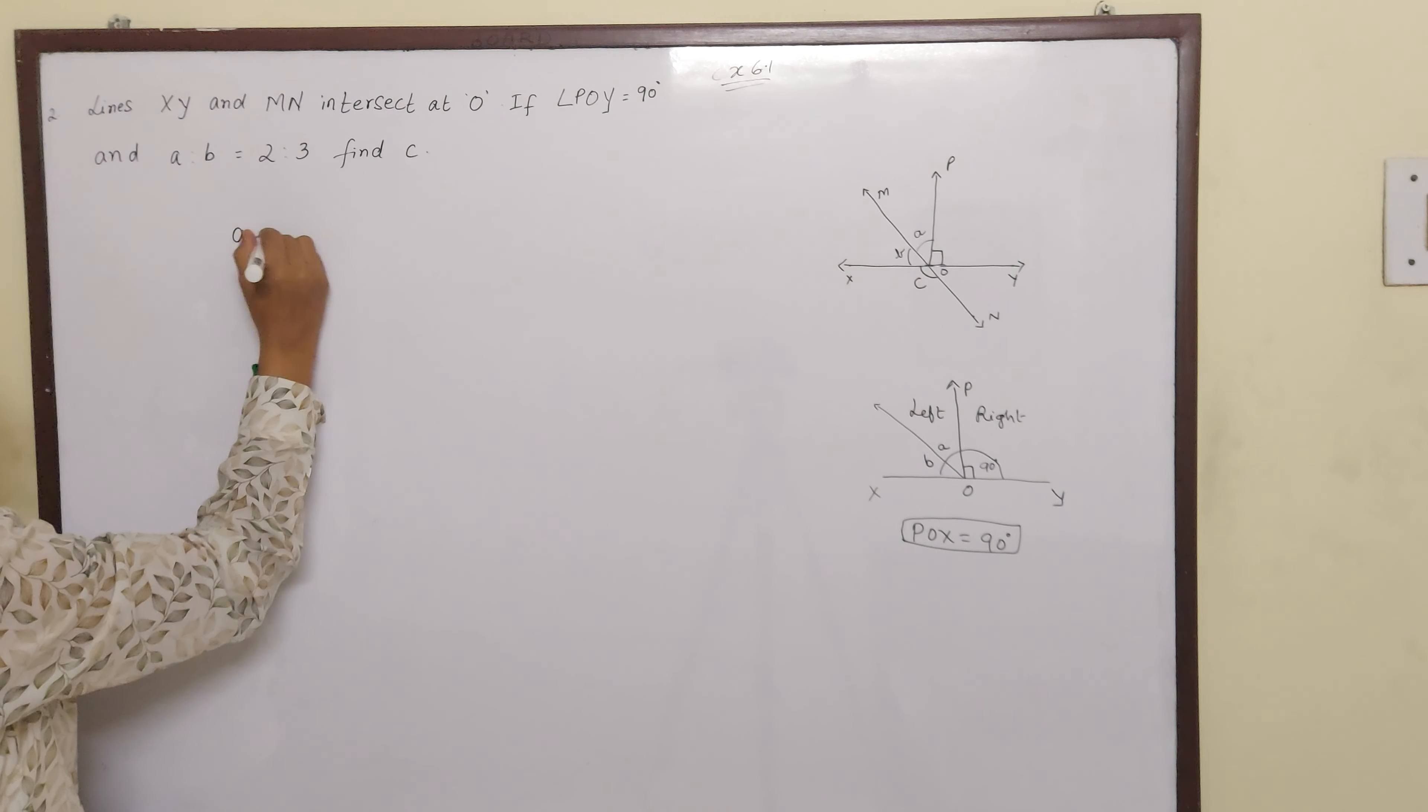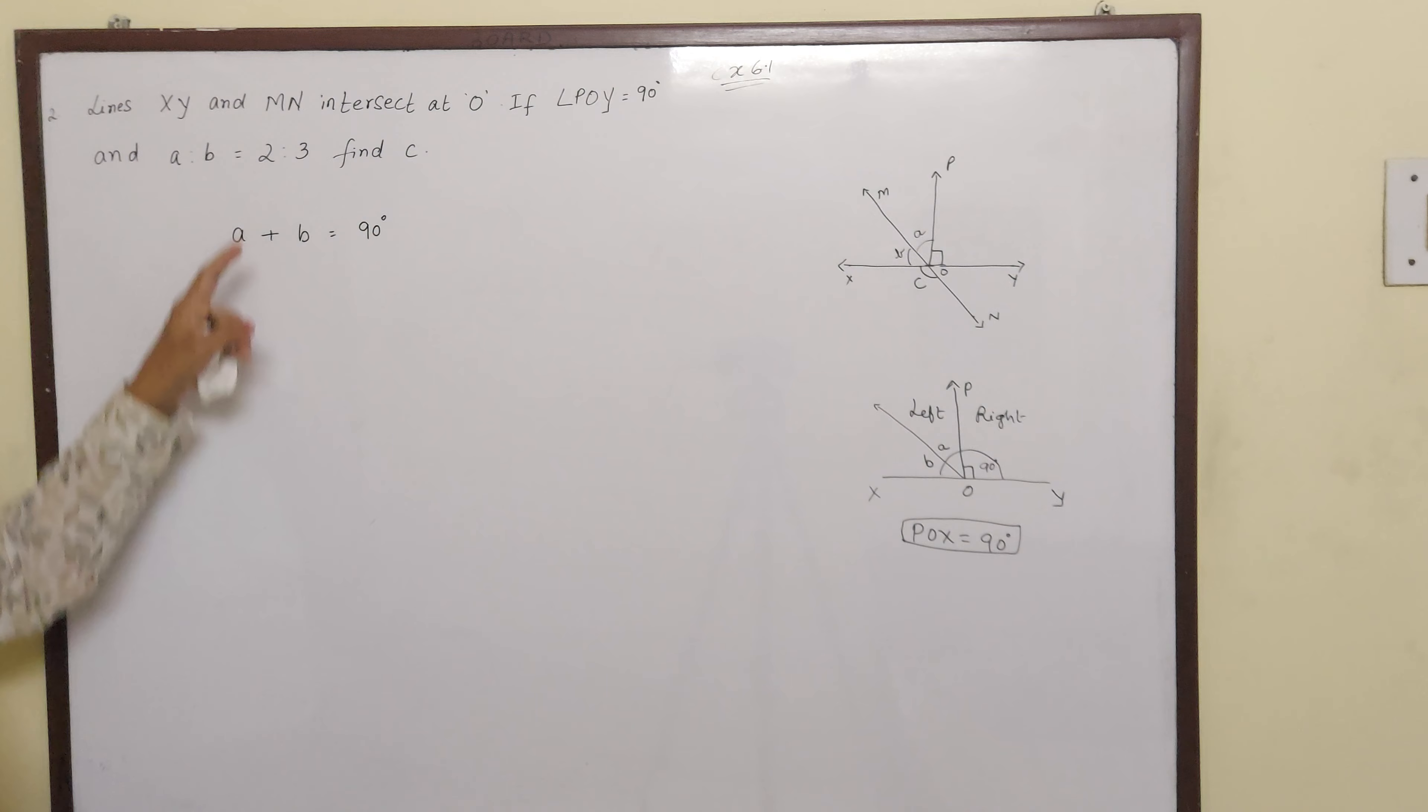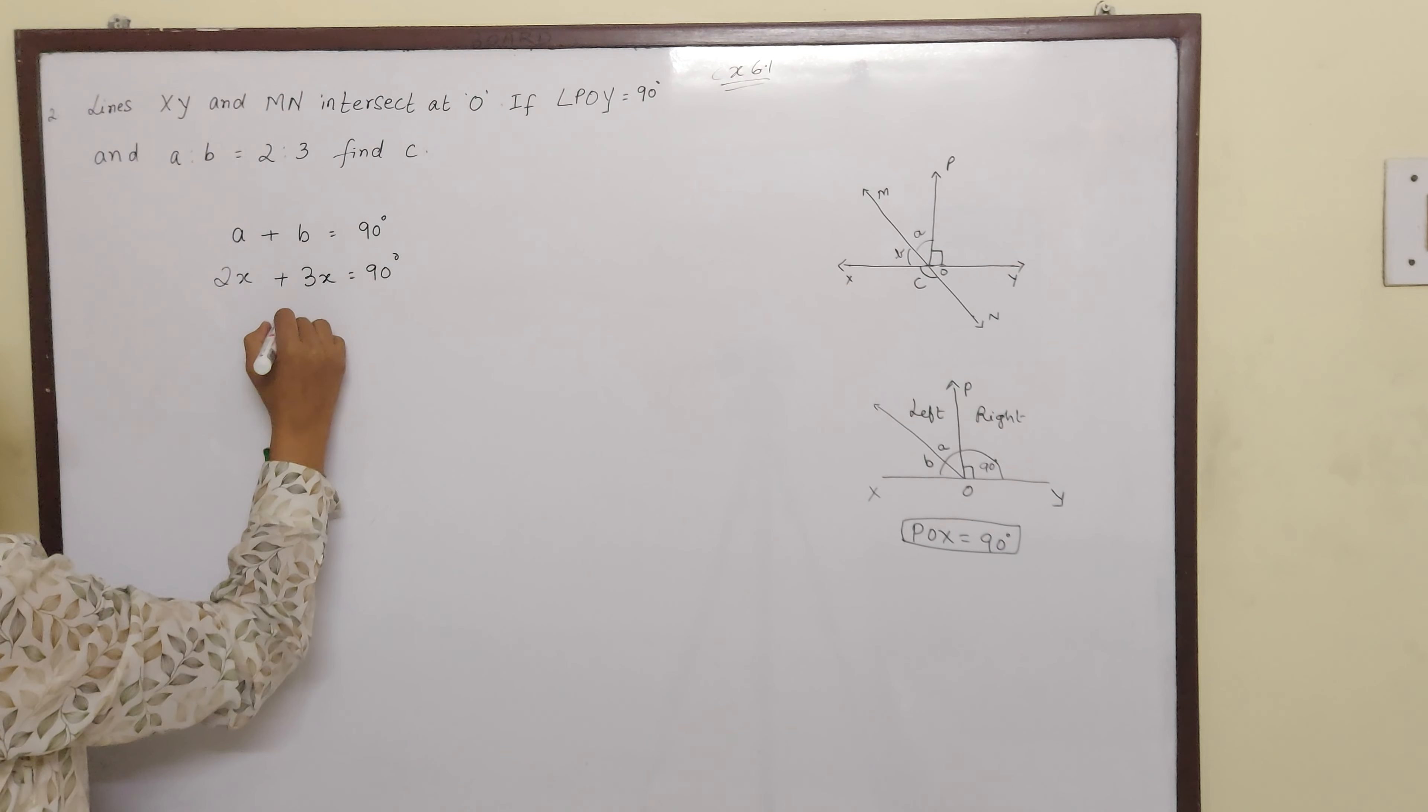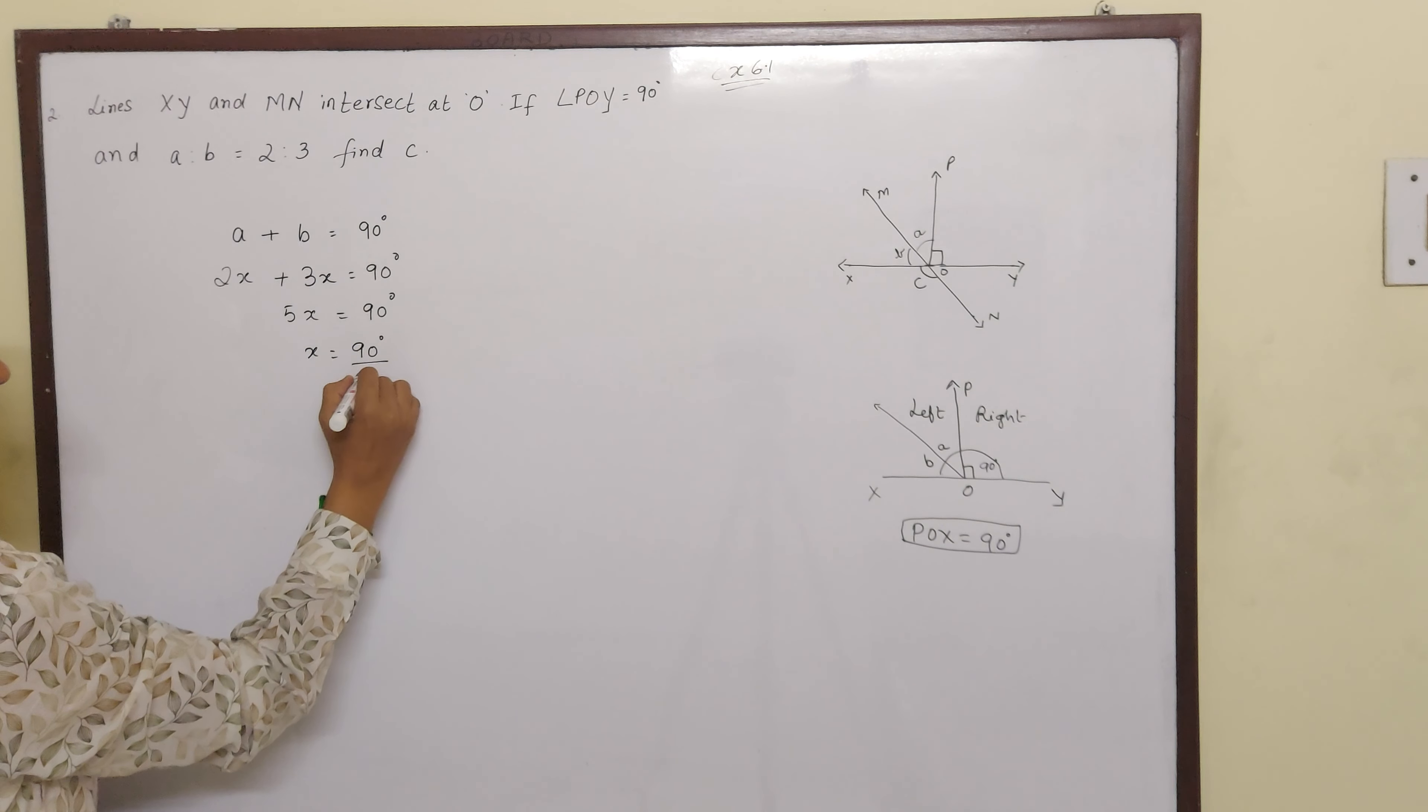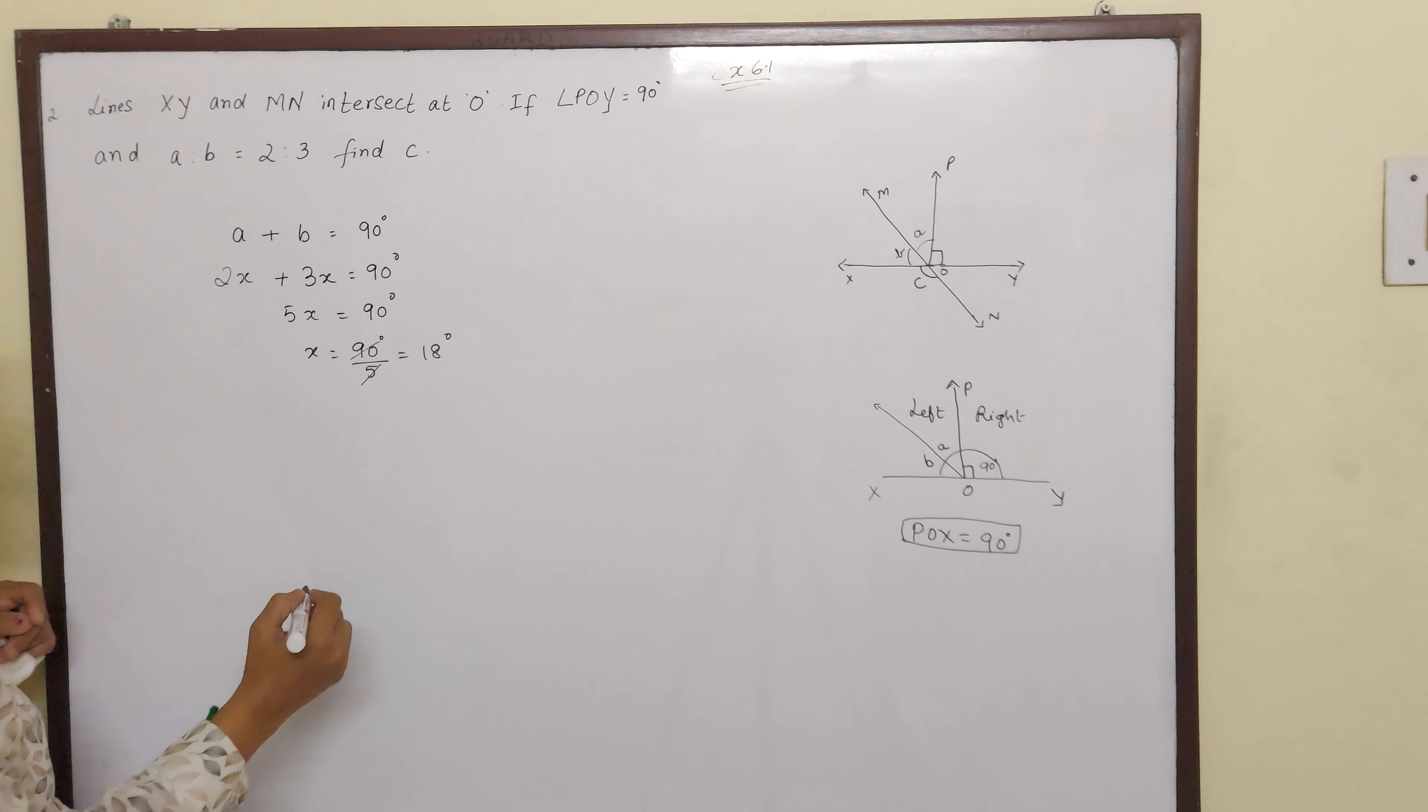So angle A plus angle B is equal to 90 degrees. And they are in the ratio 2 is to 3. That means 2X plus 3X is equal to 90 degrees. 5X is equal to 90 degrees. X is equal to 90 degrees divided by 5 which is 18 degrees.